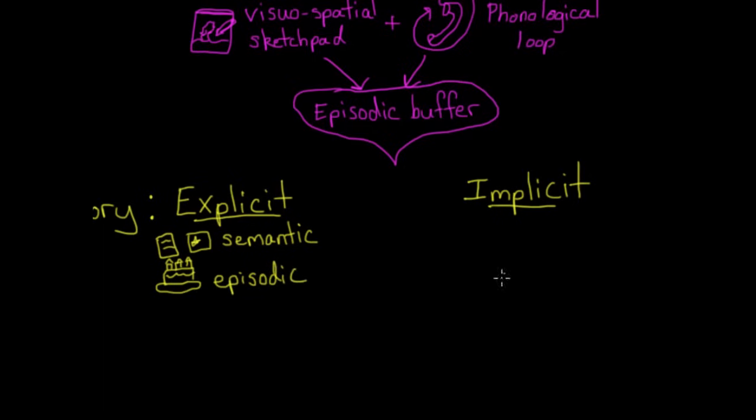While explicit memories are easy to define, implicit memories are a little bit fuzzier. They involve things you may not be able to articulate, such as how to ride a bicycle. You probably can't say clearly how much pressure to put on the pedals or exactly how to turn the handlebars, but provided that you ever learned in the first place, if you get on a bike and just do it, you probably won't fall over. Memories for procedures like riding a bike are conveniently called procedural memories.